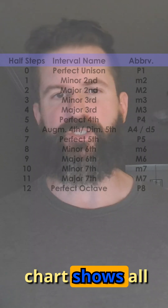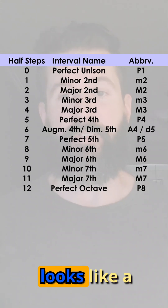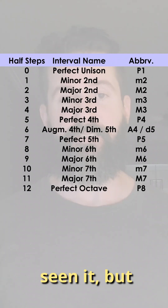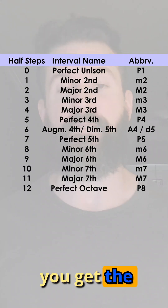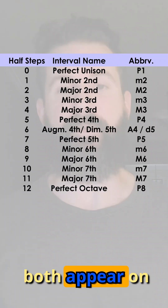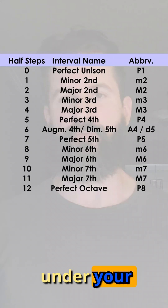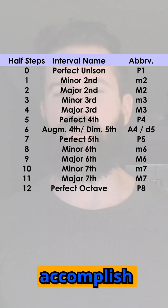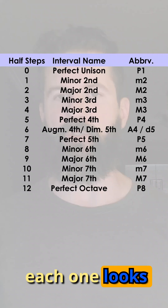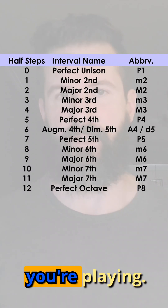This chart shows all the intervals within an octave. It probably looks like a lot of complex information if you've never seen it, but it's really pretty simple once you get the hang of it. Knowing how these intervals both appear on the fretboard and feel under your fingers is what we're trying to accomplish here. So let's go over how each one looks on the fretboard so that you can picture them easily when you're playing.